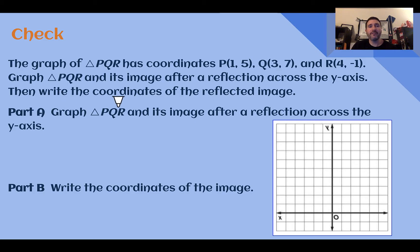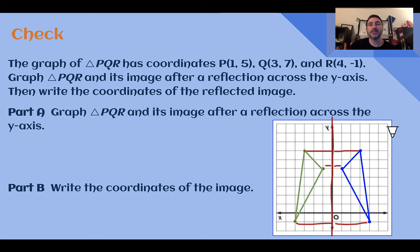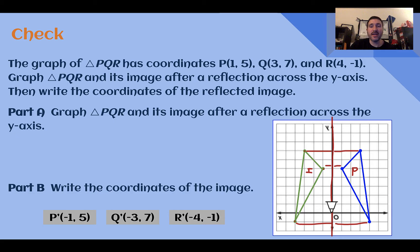Check your answer. First let's graph. There's your original coordinates: P at (1, 5), Q at (3, 7), and R at (4, -1). If we're graphing the image after a reflection across the y-axis, we reflect each point across that axis. P is 1 unit apart from the y-axis, so P prime should be 1 unit on the other side. Q is 3 units away, so Q prime is 3 units away. R is 4 units away, so R prime is 4 units away. Here's our pre-image and here is our image. The coordinates of the image: P prime is at (-1, 5), Q prime is at (-3, 7), and R prime is at (-4, -1). The key here is that everything in the pre-image is the same distance away from the line of reflection as the image is.